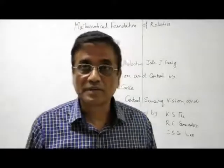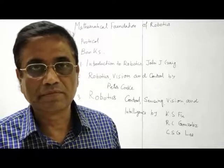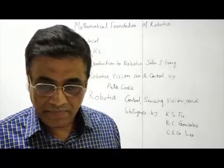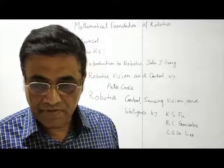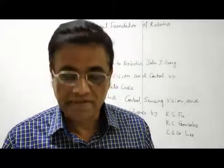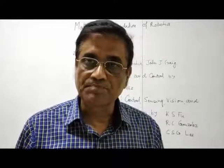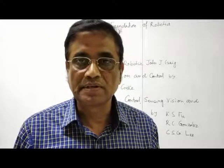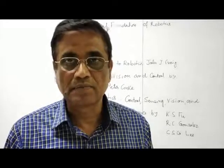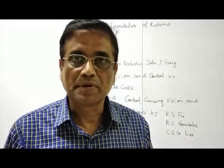Two kinds of students are here. For one group, the name of the course is Mathematical Foundation of Robotics — these are the dual degree students. For the seven-semester students, the name of the course is Robotics and Industrial Automation. Since a substantial portion is common, I have decided that the lectures will be conducted together as far as possible, and afterwards it will be bifurcated when the industrial automation part comes.